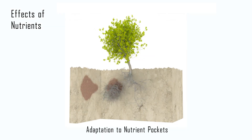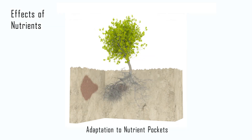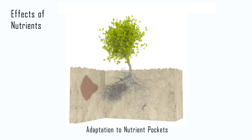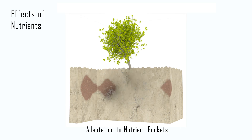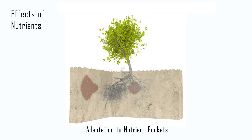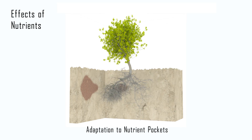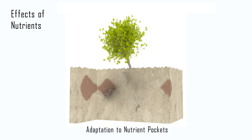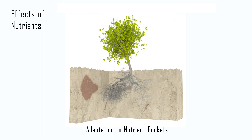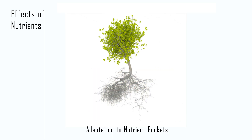In this example, a nutrient pocket, indicated in red, induces asymmetric development of two primary root branches. Our simulation results conform to the root growth dynamics observed in scientific experiments.